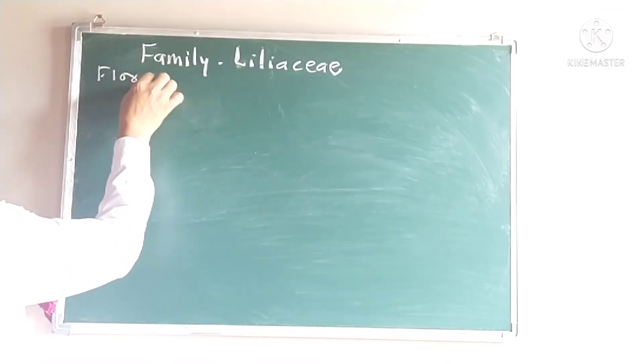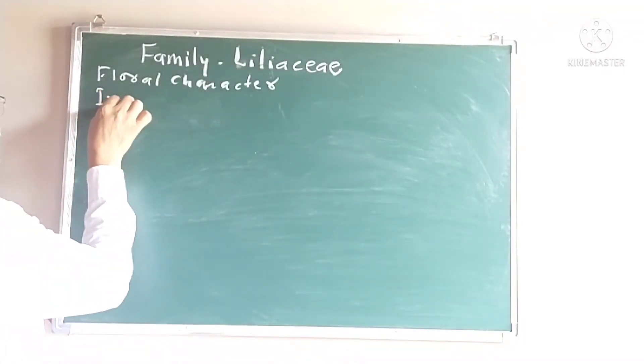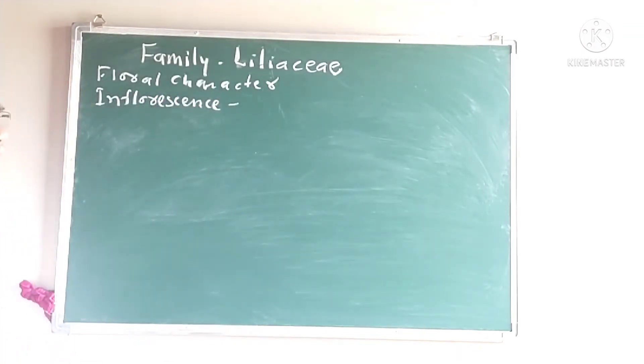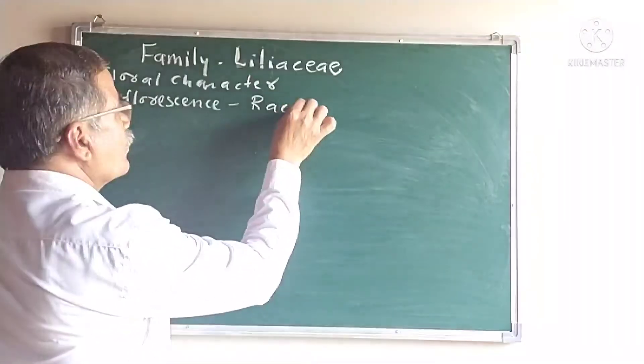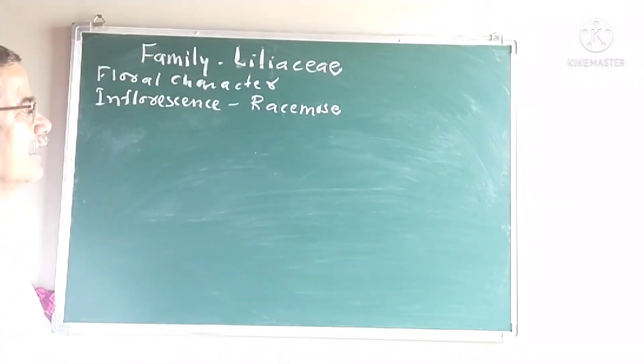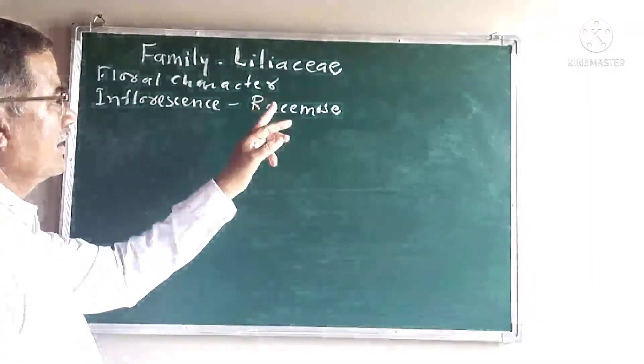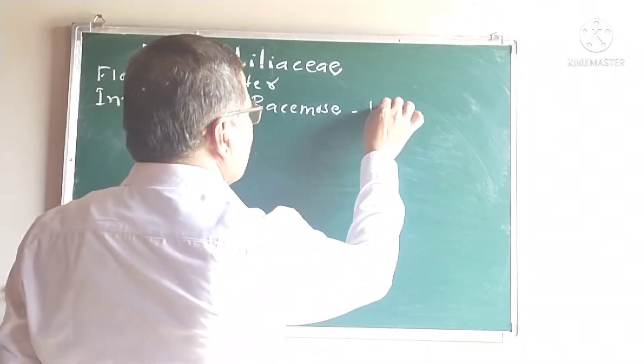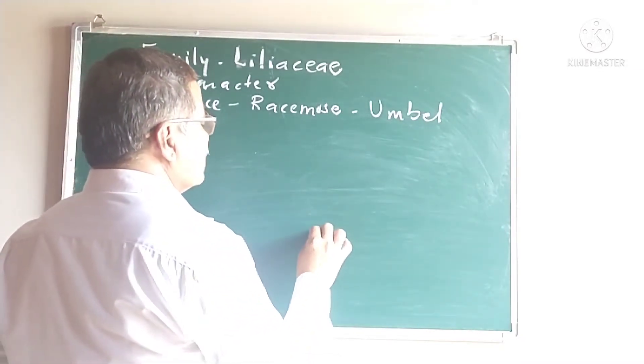Here we are going to see the floral characters. Under floral characters, we see inflorescence. Inflorescence is nothing but the group of flowers arranged on the same axis. They are either single or in groups. The majority of species consists of the racemose type. Racemose type: the peduncle is elongated, much elongated, it does not end in a flower. Flowers are arranged in acropetal succession, with younger flowers at the tip and older flowers at the base.